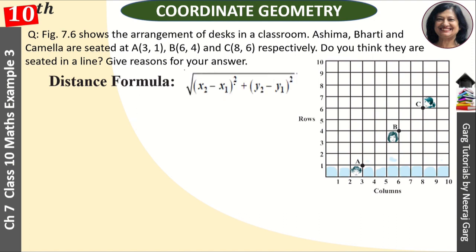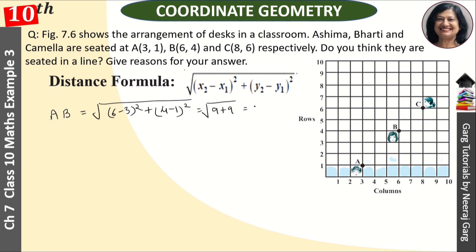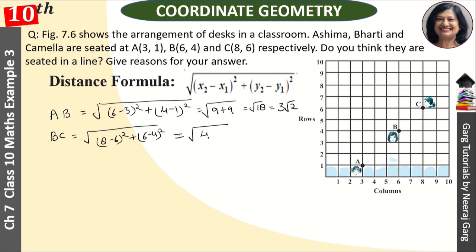The distance formula is root of (X2 minus X1) whole square plus (Y2 minus Y1) whole square. We find AB and BC. BC equals root of (8 minus 6) whole square plus (6 minus 4) whole square, which equals root of 4 plus 4, equal to root 8, or 2 root 2.